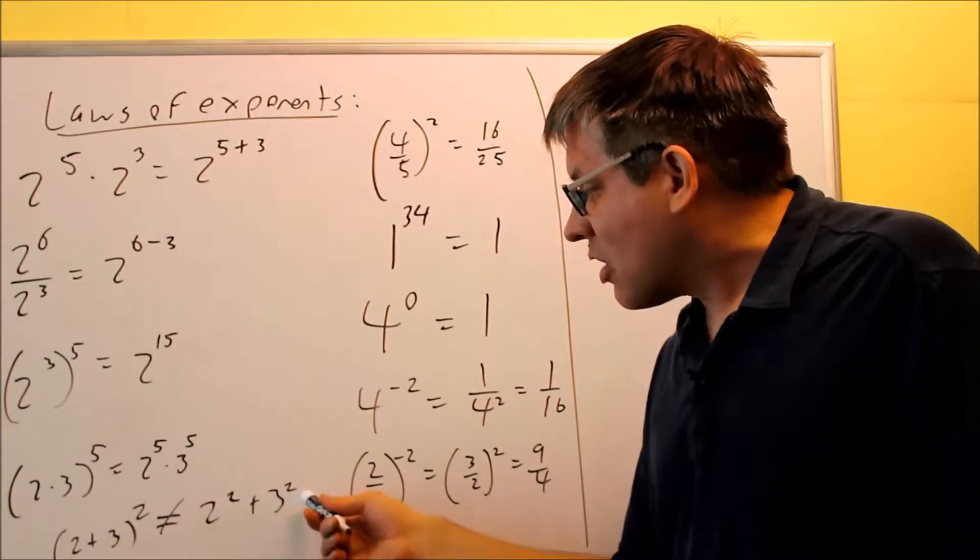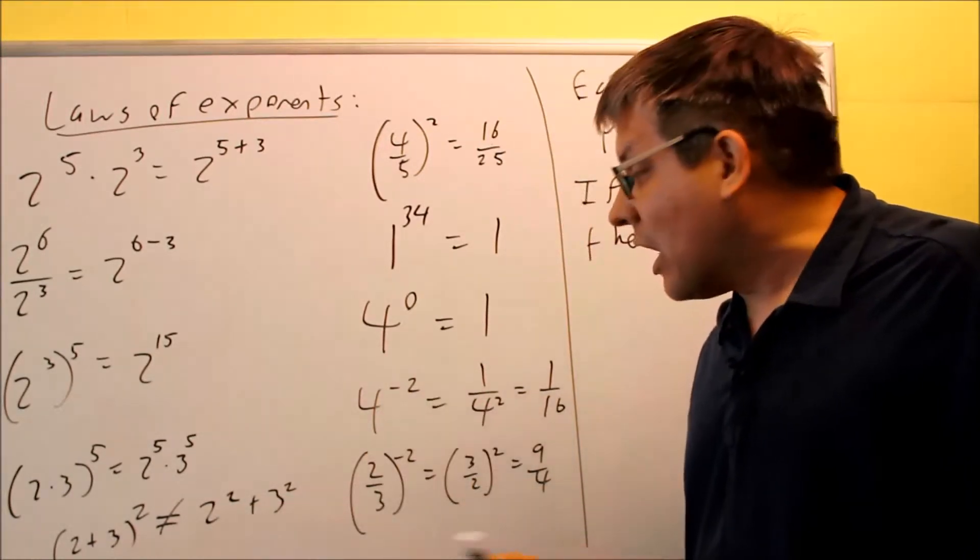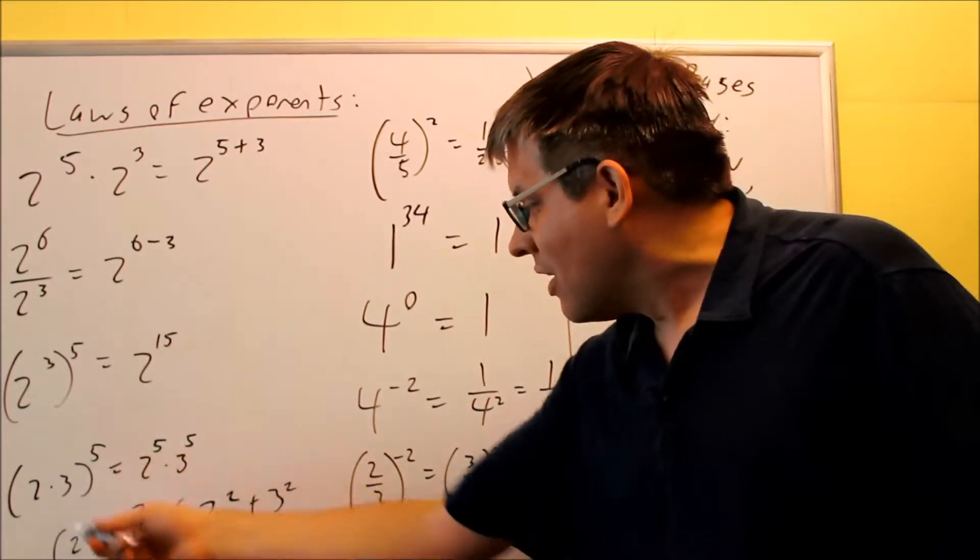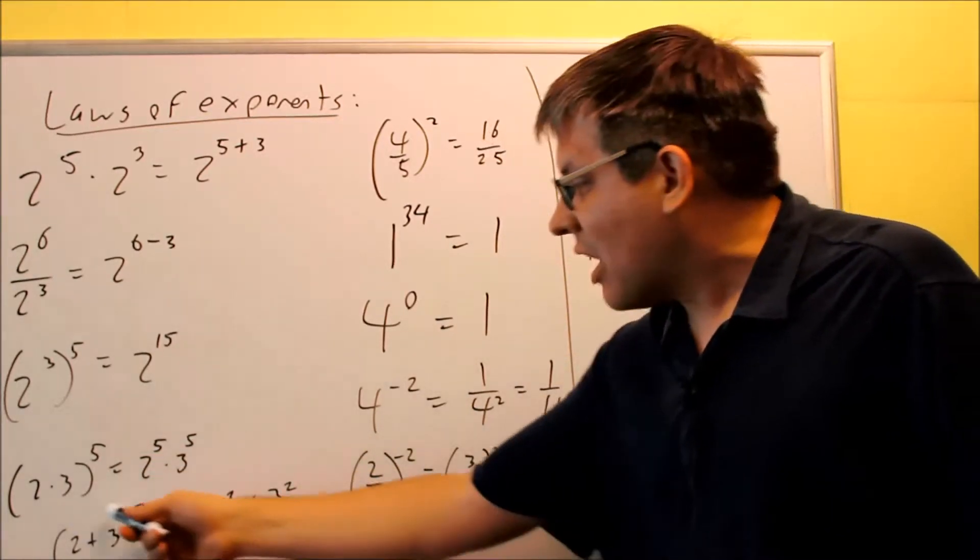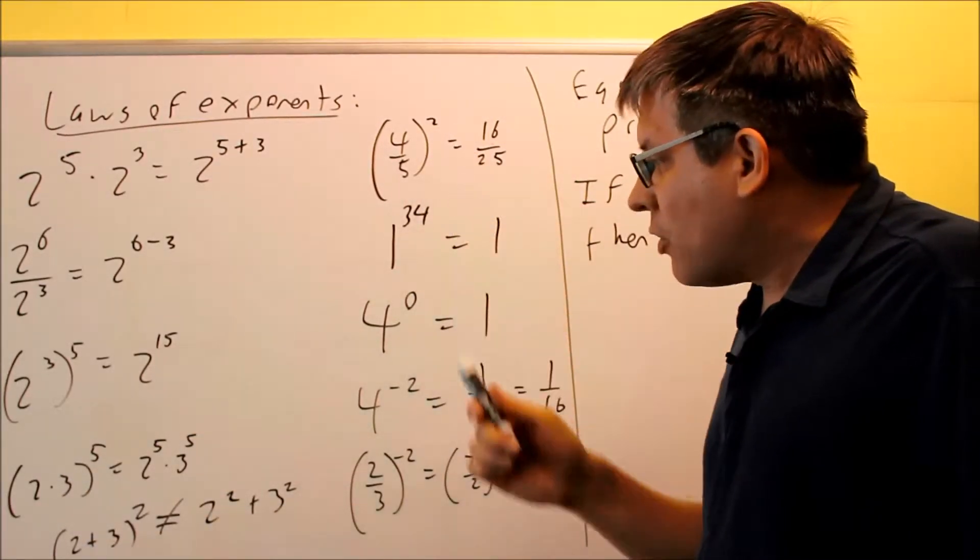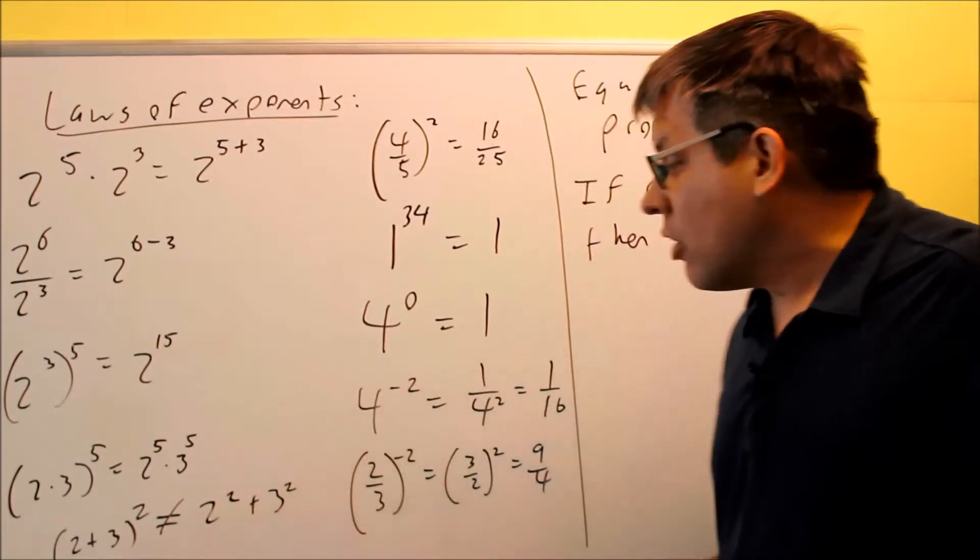But clearly if I add these numbers together separately, I'm not going to get 25 for that. I get 4 plus 9, that's 13. So I know for sure that that does not work. So inside, you can only have multiplication or division in order for that distributive property to work with your exponents. This does not work there.